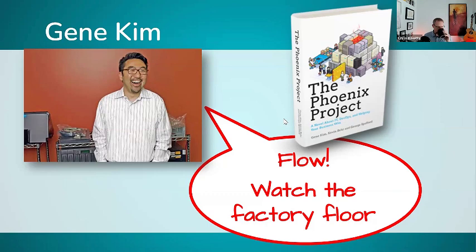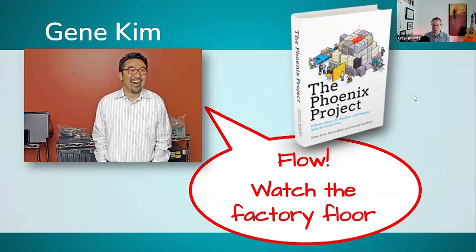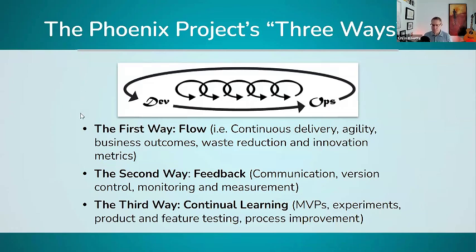Gene takes lessons from manufacturing — particularly from the total quality movement that came out of Japan and the quality revolution in the U.S. in the early 1980s. If you remember anything about the U.S. automotive industry, it was notorious for poor quality, and a lot of that poor quality arose from the same kinds of challenges we have here — challenges directly related to WIP. They came up with ways to manage that in manufacturing, and in 'The Phoenix Project,' Gene reimagines those for modern workflows, introducing the concept of the Three Ways.